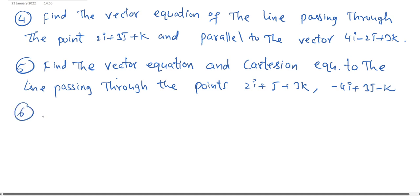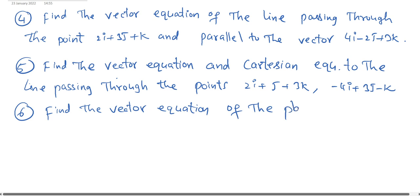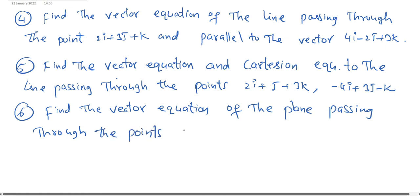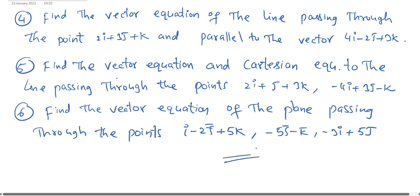Sixth question: Find the vector equation of the plane passing through the points ī − 2j̄ + 5k̄, −5j̄ − k̄, and −3ī + 5j̄ + 3k̄. These are the VSAQs from the Vector Edition chapter.